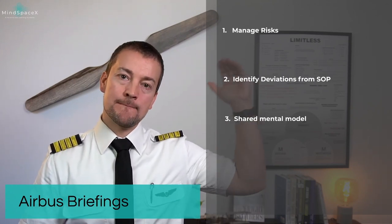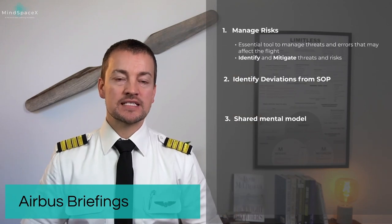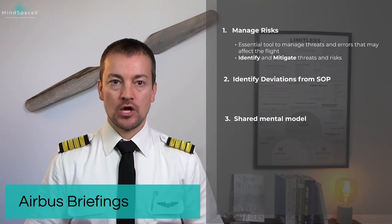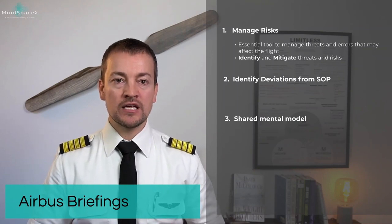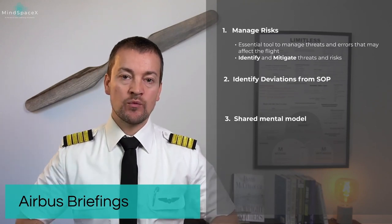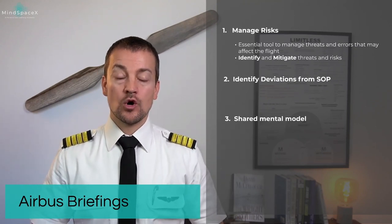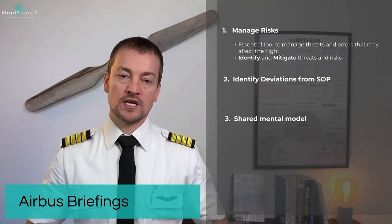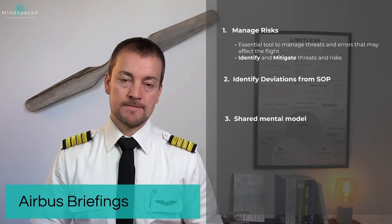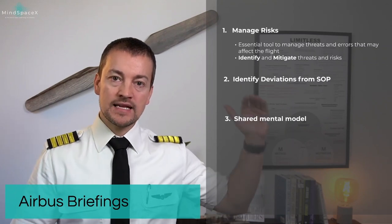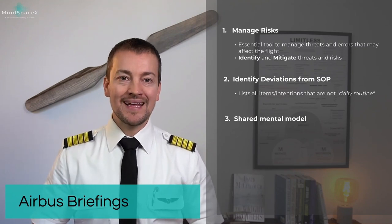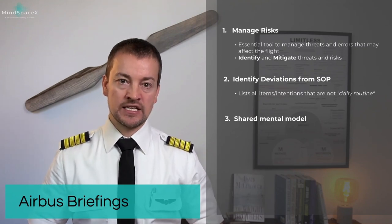The first element — manage risk — is how we identify and mitigate threats and errors. We simply look for any potential threats and errors that might affect our daily routine and we brief them as a crew. We only brief those items, which means briefings will be different from flight to flight. In the second element — identify deviations from SOP — we talk about anything that is not daily routine.